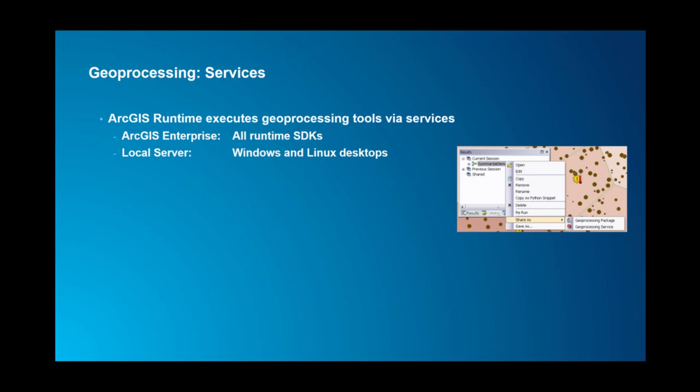The ArcGIS Runtime works with geoprocessing via services. These can be running in your ArcGIS Enterprise as ArcGIS Server geoprocessing services, which is available to all ArcGIS Runtime SDKs. Or there's a component called the ArcGIS Runtime Local Server that can host local geoprocessing services, available on Windows and Linux desktops with the ArcGIS Runtime SDKs for .NET, Java, and Qt.